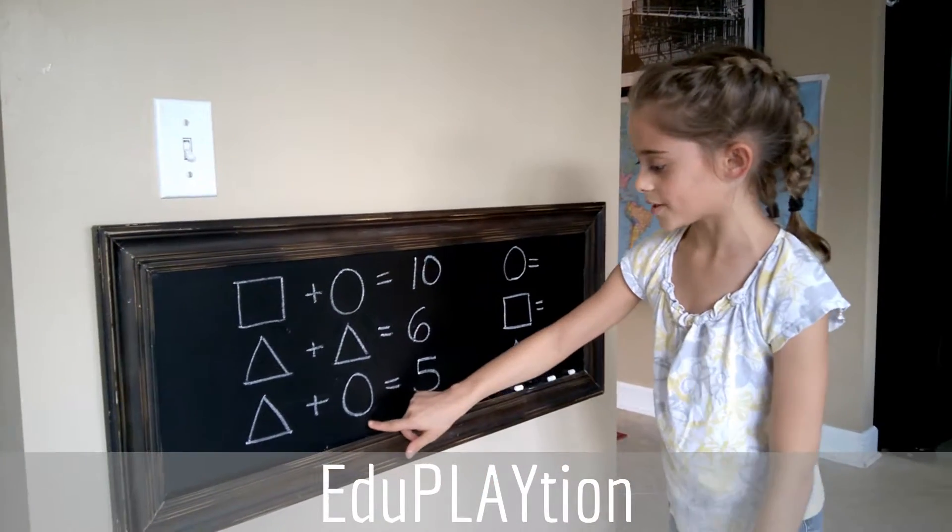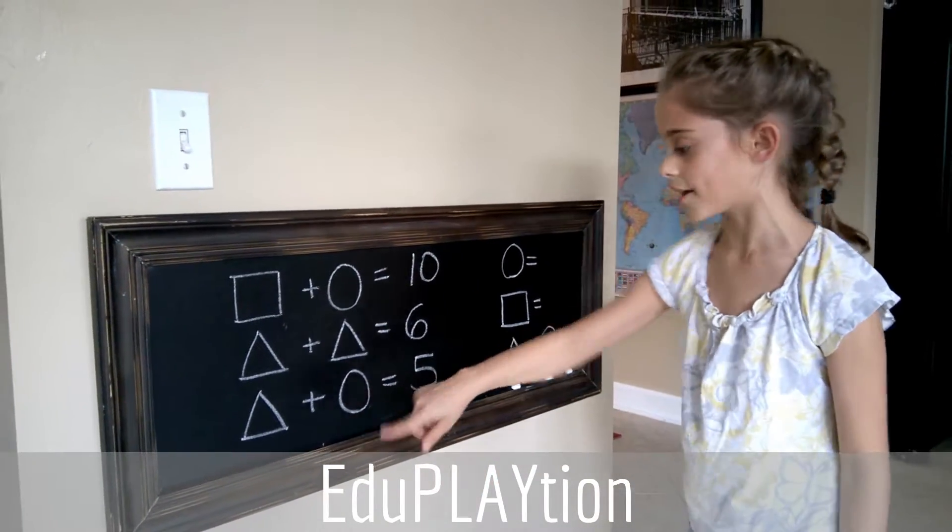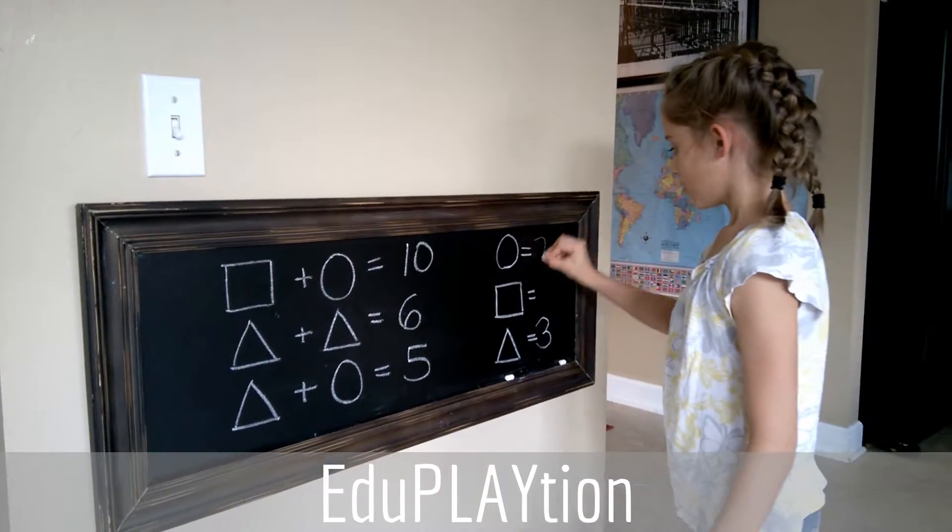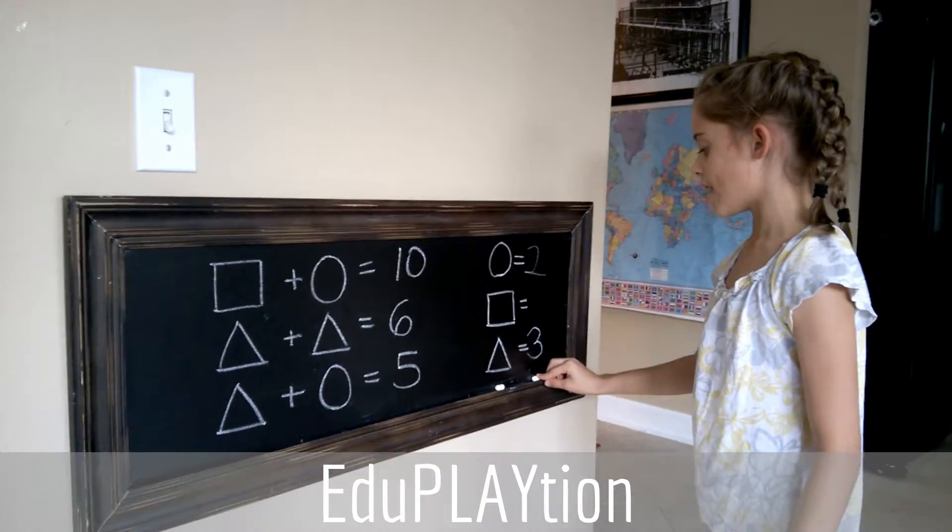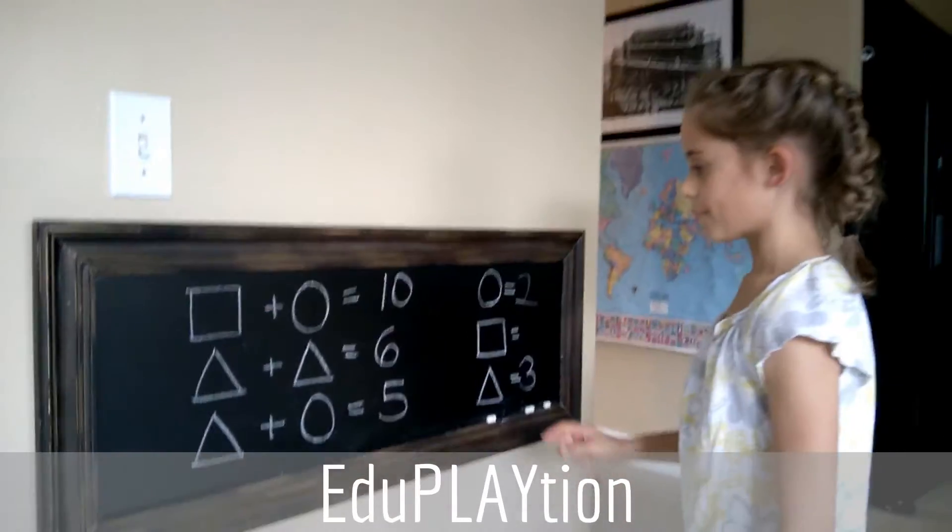And the circle would be 2 because 5 minus 2 equals 3. So we put 2 for the circle. And it's always good to write notes when you're doing a math problem.